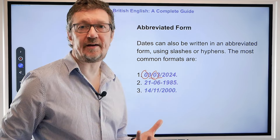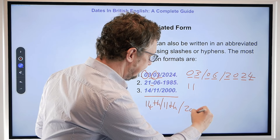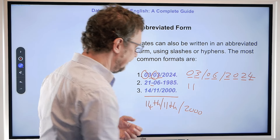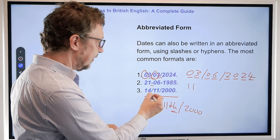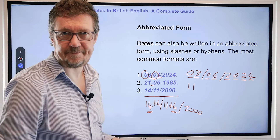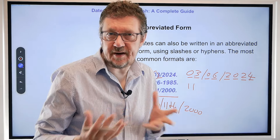Something like this as well — this is 14th of the 11th 2000. And actually, when you say it, you will say it like 'the 14th of the 11th 2000'. But we never write these articles — it's always like the abbreviated form. So, that's how we do it in an abbreviated form.